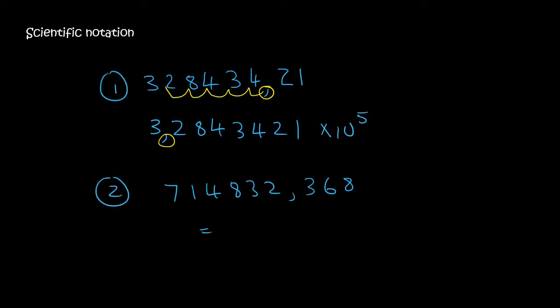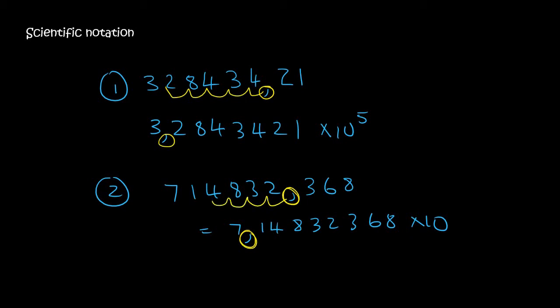Let's do another one. So this one would be 7 comma 1, 4, 8, 3, 2, 3, 6, 8 times 10. If we look over here, the decimal place was there, now it's between the 7 and the 1. So that's 1, 2, 3, 4, also 5 places. So that's going to be times 10 to the 5.